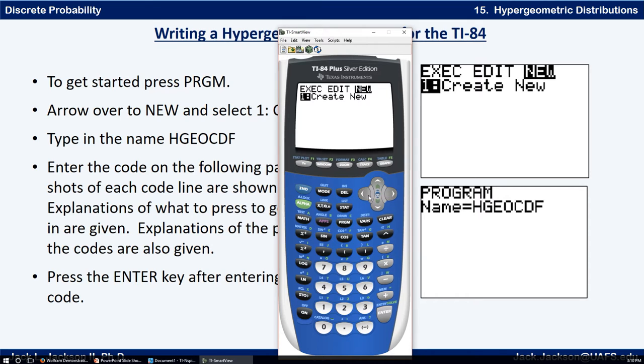But once you're in the edit mode of a particular program, now when you hit program, you get some different screens. These are control statements: if, then, else, for, while, repeat, end.